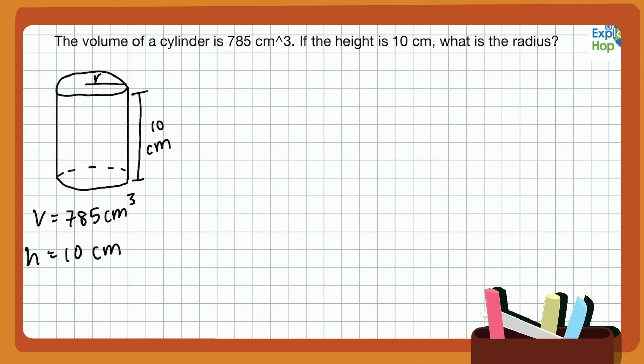Before we would take the height and the radius to find the volume, now we're taking the volume and the height to find the radius. We know that the formula for the volume of a cylinder is equal to pi times the radius squared times height.